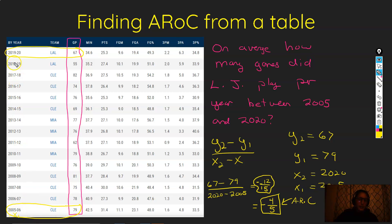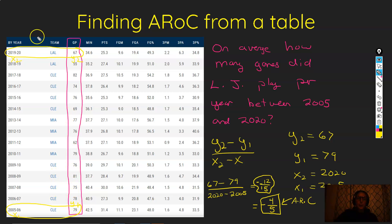Average rate of change from a table: do your y2 minus y1 over x2 minus x1. Your outputs are always your y's, your inputs are always your x's. Calculate the slope from your last endpoint and your first endpoint.